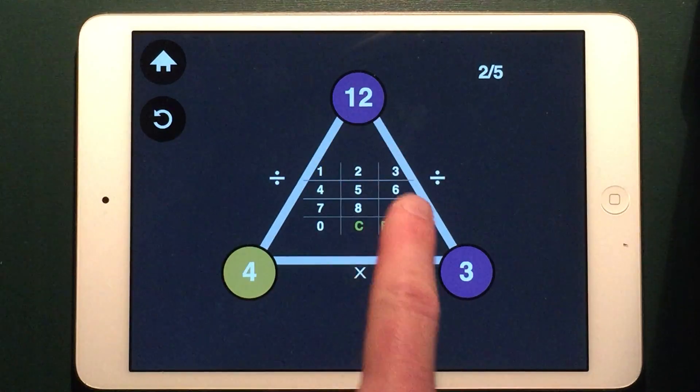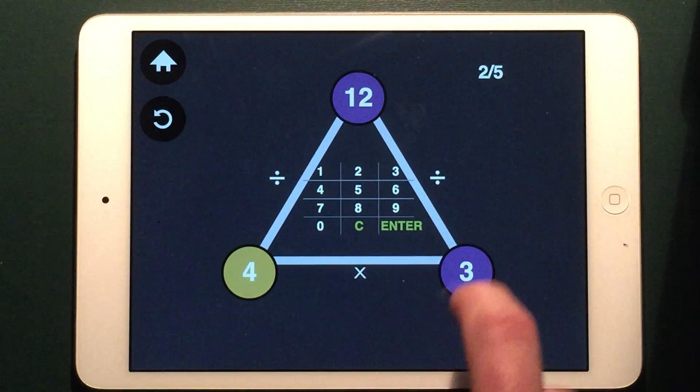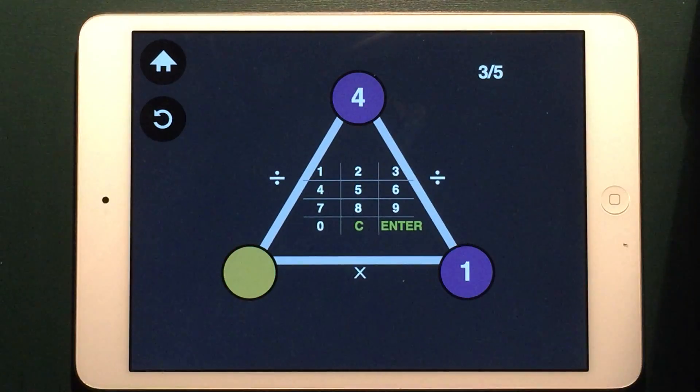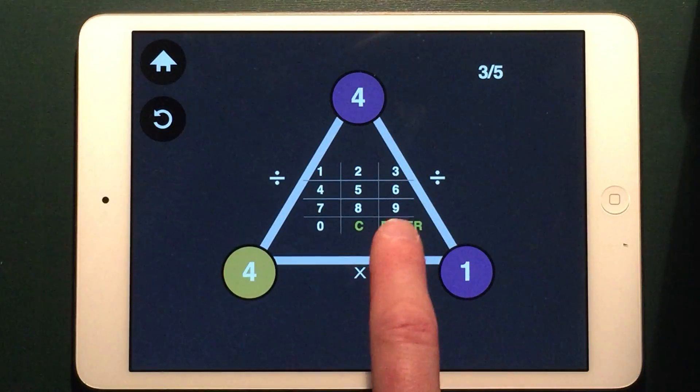So 12 divided by 3 is equal to 4. 4 divided by 1 is equal to 4.